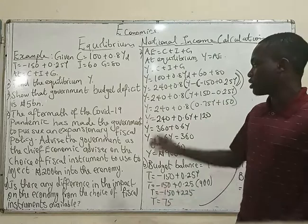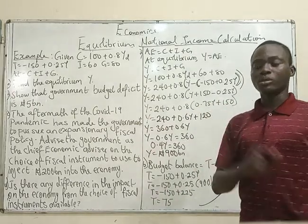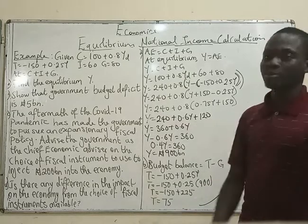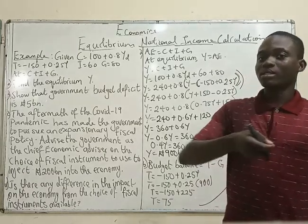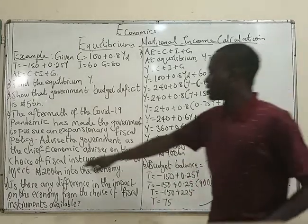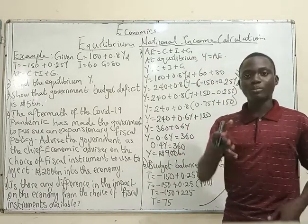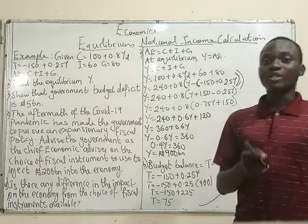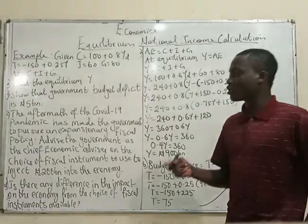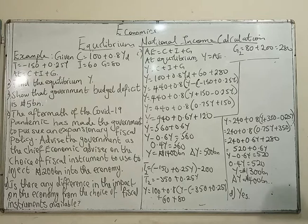So the question is asking: should the government increase government spending by 200 billion, or should it cut taxes by 200 billion? In order to answer that, let us look at increasing government spending by 200 billion.